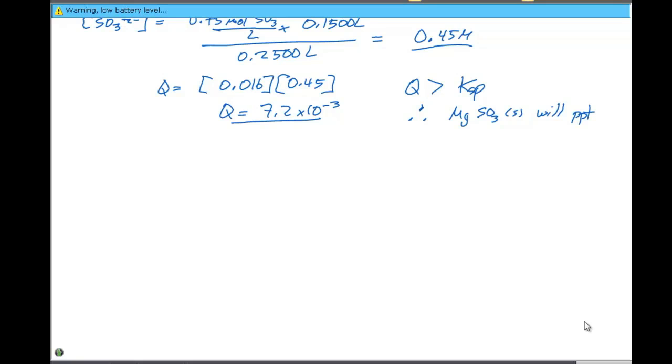Does anybody have any questions about what we did there? The key thing in these particular problems is we need to know the concentrations of all the ions of interest. The ions of interest in this case are the magnesium 2+ and the SO3 2-. We figure out those concentrations from adding the solutions together and taking the total volume. Then we compare Q and the K and figure out if a precipitate would form.